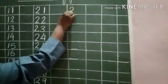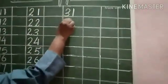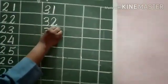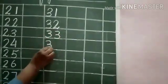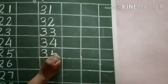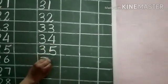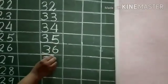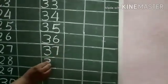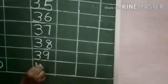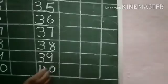Three, one, thirty-one. Three, two, thirty-two. Three, three, thirty-three. Three, four, thirty-four. Three, five, thirty-five. Three, six, thirty-six. Three, seven, thirty-seven. Three, eight, thirty-eight. Three, nine, thirty-nine. Four, zero, forty.